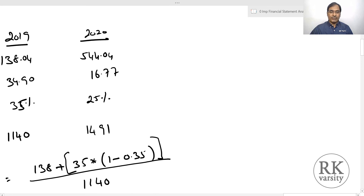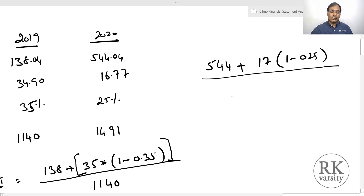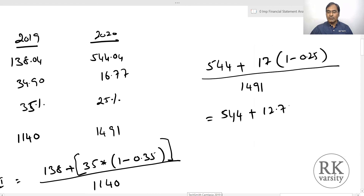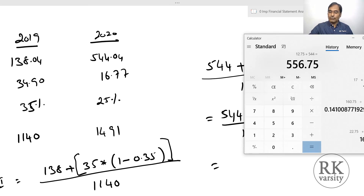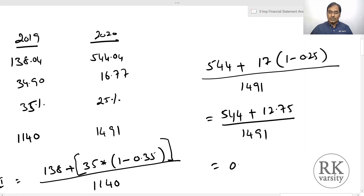For FY2020: (544 + 17 × (1 − 0.25)) ÷ 1,491. Tax-adjusted interest = 17 × 0.75 = 12.75 crore. So (544 + 12.75) ÷ 1,491 = 0.37, or 37%. The denominator is 1,491 crore, representing total long-term liabilities plus equity.